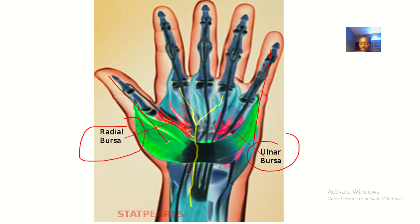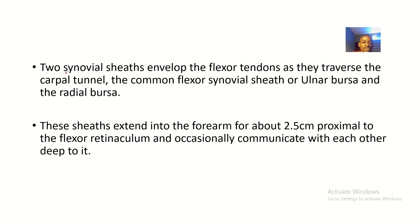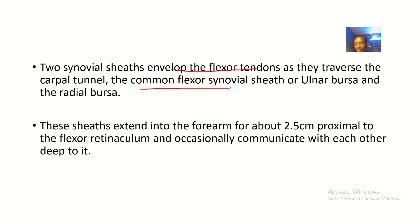Two synovial sheets envelope the flexor tendons as they go through the carpal tunnel. We have the common flexor synovial sheet, which is the ulnar bursa, and we also have the radial bursa. So the ulnar bursa is also known as the common flexor synovial sheet.